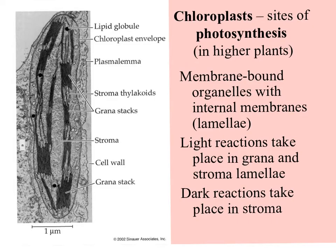In higher plants, photosynthesis takes place in chloroplasts — organelles that are membrane-bound with additional internal membranes called the photosynthetic lamellae. There are two parts of photosynthesis: the light reactions and the dark reactions. The light reactions take place in the grana and stroma lamellae — the grana are the stacks of membranes, and the stroma lamellae are the long, skinny ones. The dark reactions take place in the liquid matrix, called the stroma.